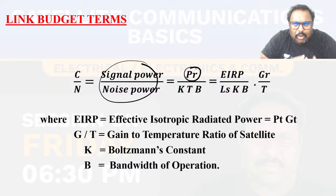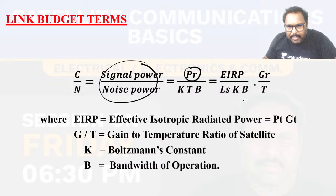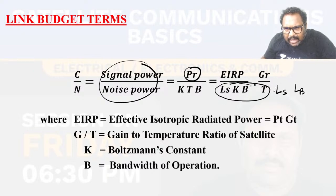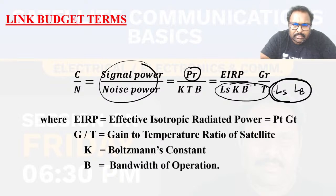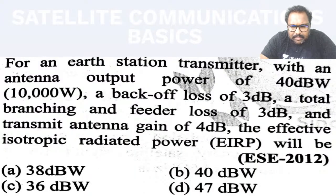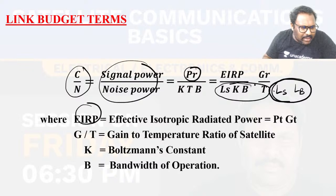It's all about terminology and learning the terminology. The underlying equation is still the free space propagation equation. Any extra loss — back-off loss, feeder loss, whatever loss — just multiply it in the denominator; add another LS or LB term. So in link budget terms, the key meanings to know are: C/N ratio, EIRP, and G/T ratio.